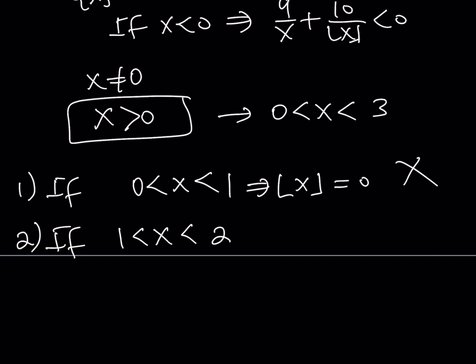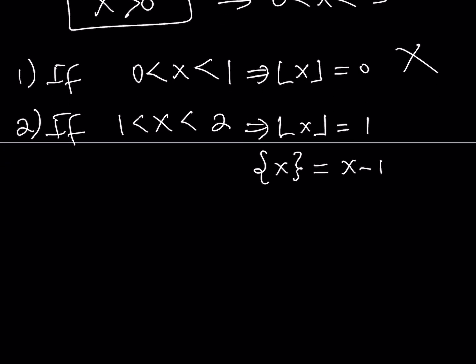Case 2: what if x is between 1 and 2? If x is between 1 and 2 — something like 1.5, 1.2, 1.09 — the floor value of x is going to be 1. And the fractional part, which is x minus the floor value, equals x minus 1. So our equation turns into: 8 over (x minus 1) equals 9 over x plus 10.